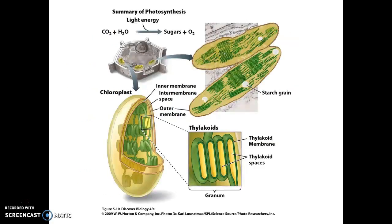Structurally speaking, there are two membranes: an outer membrane and an inner membrane. And inside of that inner membrane, we have the stroma, which is that liquid-filled interior, and then these stacks of thylakoid discs making a granum.